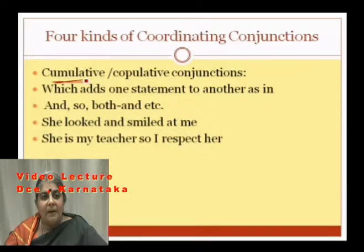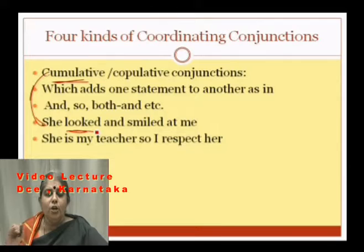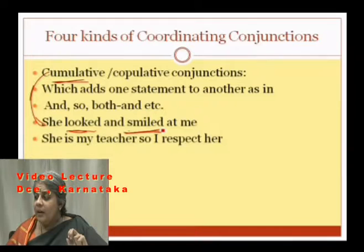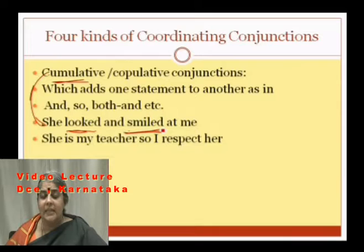'She looked and smiled at me.' This is cumulative — it gives extra information. First information: she looked. Second information: she smiled. It adds one more statement to the existing statement. That is why we call it a cumulative conjunction.